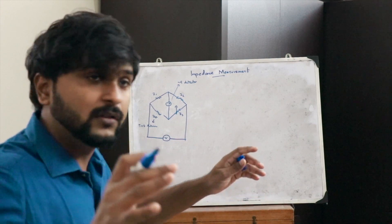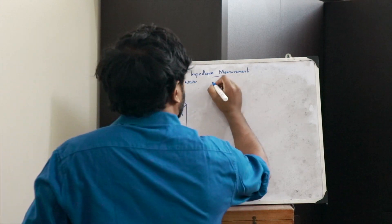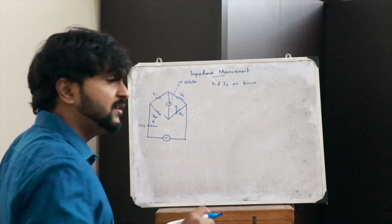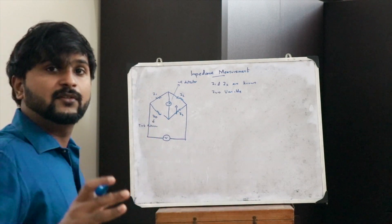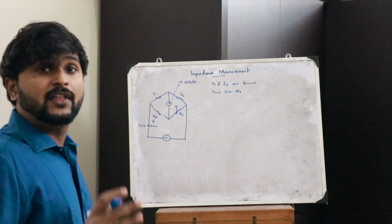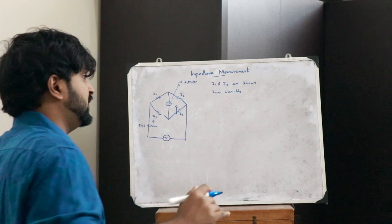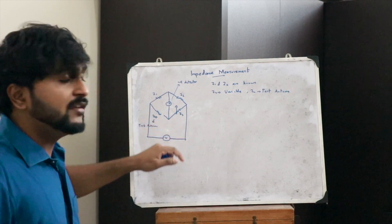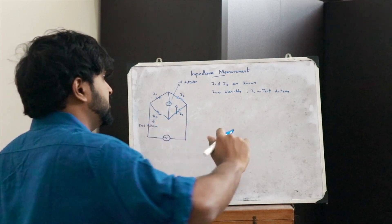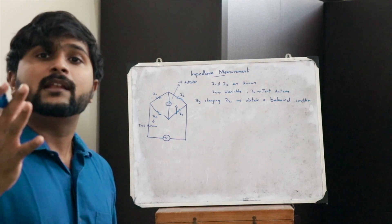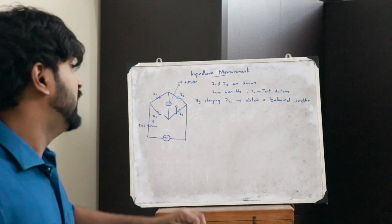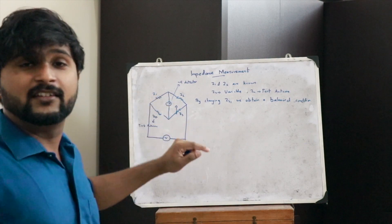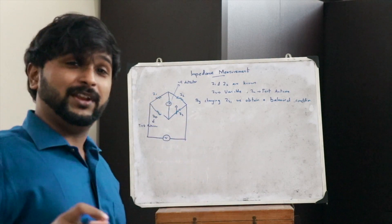To summarize: Z1 and Z2 are known impedances, Z3 is a variable impedance, and Z4 is the impedance of the antenna that we have to find. By changing the value of Z3 we obtain a balanced condition, which is reached when the null detector shows a null deflection.